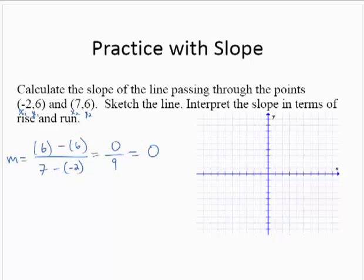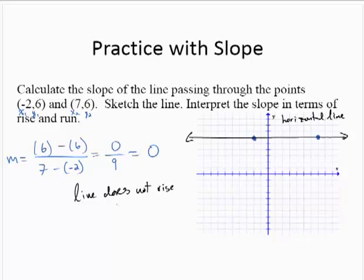Let's plot those points: (-2, 6) and (7, 6). Drawing the line through those points, we get a horizontal line. Notice the line does not rise or fall. So this line does not rise or fall.